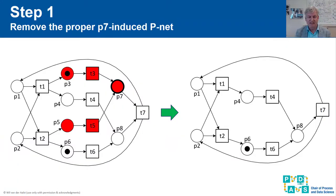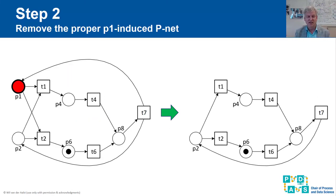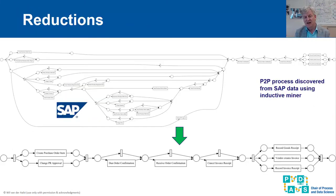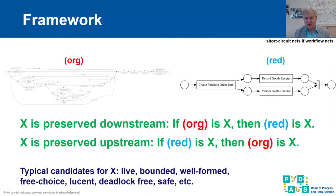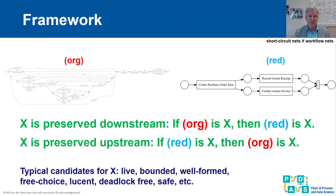I'm repeatedly applying reduction rules and I'm making a net smaller. I will present reduction rules that will allow you to basically reduce any well-formed free choice nets into either a T-net or a P-net. I will show that such reductions are always possible and I will prove that certain properties are being preserved.